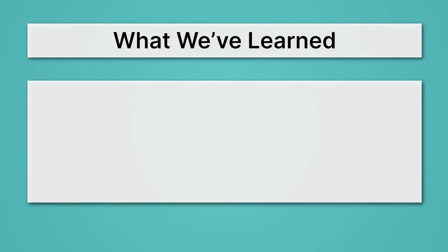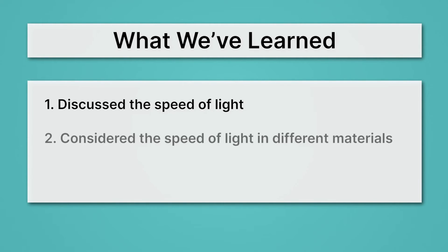Let's review what we've learned. First we discussed the speed of light. We said it's really fast, and it's basically a cosmic speed limit, it's the fastest anything can go. We considered the speed of light in different materials, and how materials slow down light. Then we calculated the frequency of light. We'll see you next time.